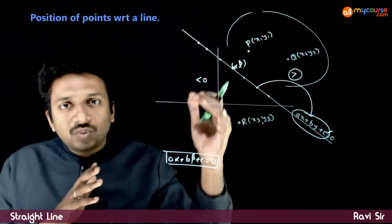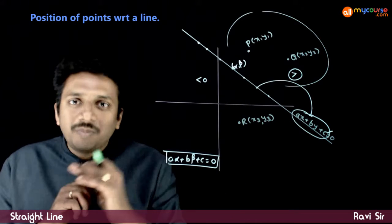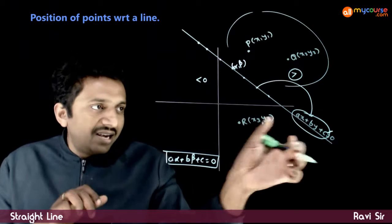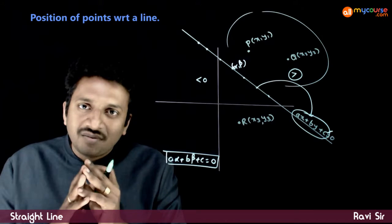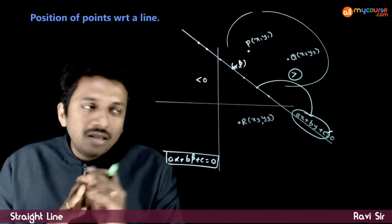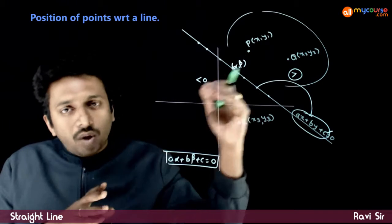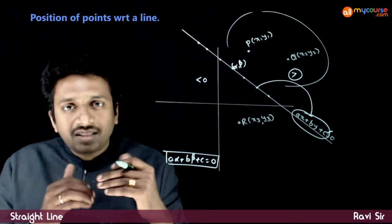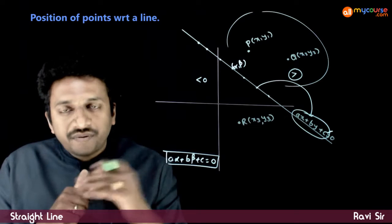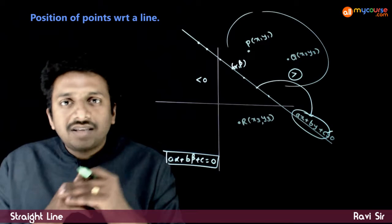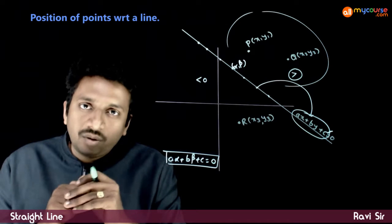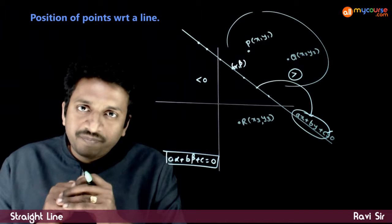Which side gives what cannot be decided unless the equation is given. Once the equation is given, on one side greater than 0 will be satisfied, and on the other side less than 0 will be satisfied.